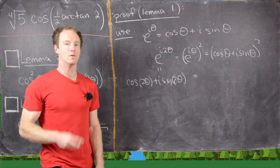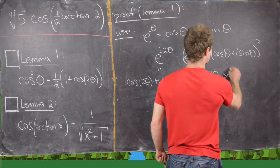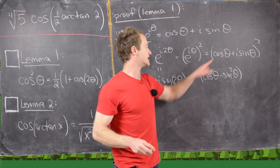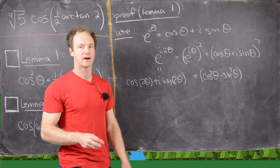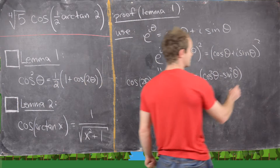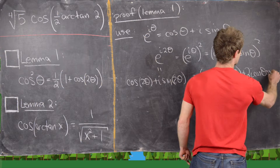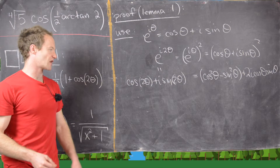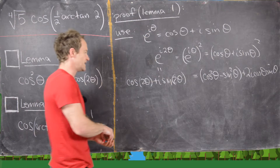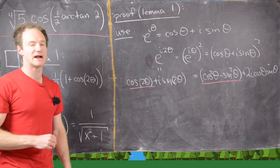Multiplying that out, for the real part we'll get cosine squared θ minus sine squared θ — that's cosine squared plus i times sine quantity squared, which is negative one times sine squared. And for the imaginary part we get 2i cosine θ sine θ. Extracting the real part of the equation on both sides, we get cosine of 2θ equals cosine squared θ minus sine squared θ.